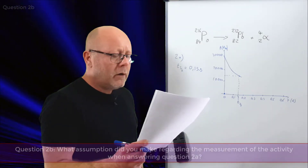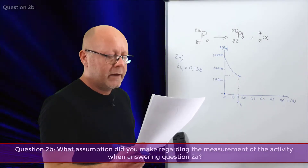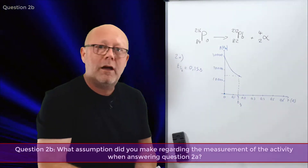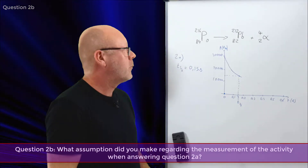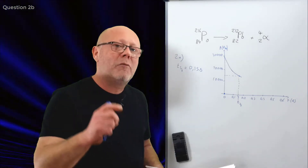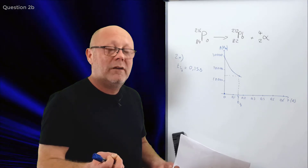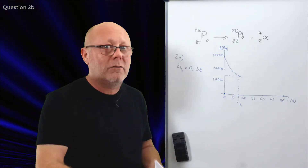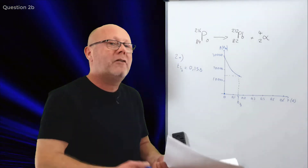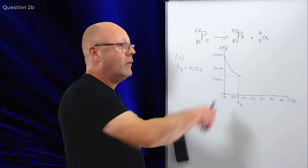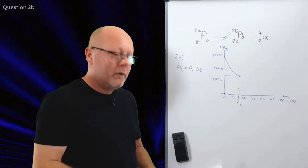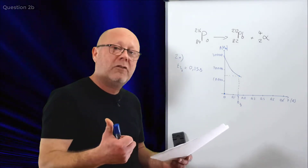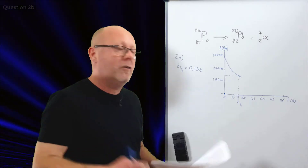Question 2B: what assumption did you make regarding the measurement of the activity when answering part A? Activity is measured by a machine that detects radiation — for example, it detects the alpha particle and counts the number of decays. For that, you need to make sure the background is not radioactive too. There is radiation in the environment that can also decay and give alpha particles, such as radium decaying to radon, which is quite common. So you first need to measure the background radiation, then do your measurement, and remove the background from your measurement. The assumption we made is that either there was no background radiation, or the background radiation was measured and removed from the data before plotting the graph.